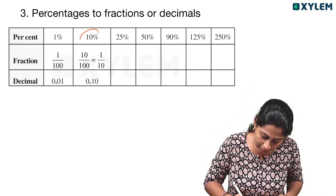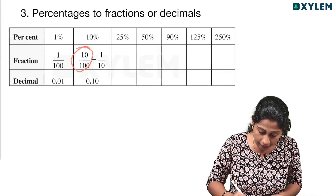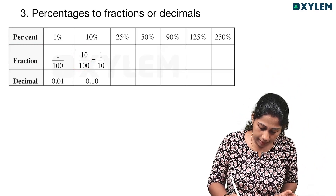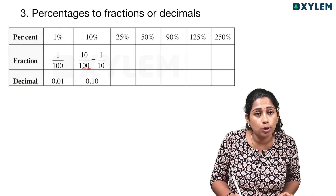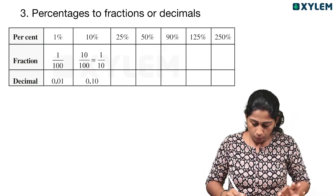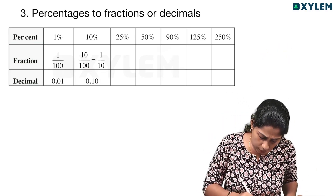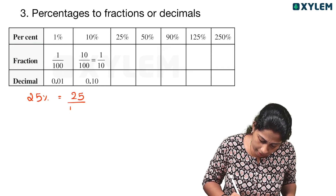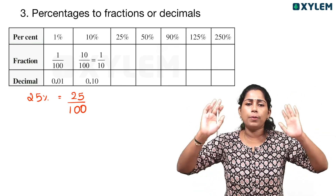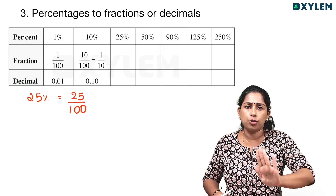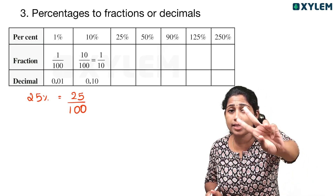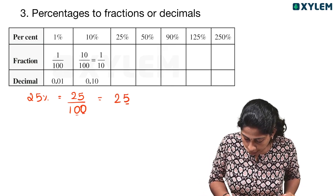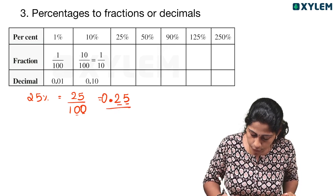Now we are going to study 10 percent. 10 percent is 10 by 100 as a fraction — that's 10 divided by 100. For the decimal, we write 2 decimal places: 0.10. The third question is 25 percent. 25 percent is 25 by 100. The denominator is 100. The answer is 0.25.